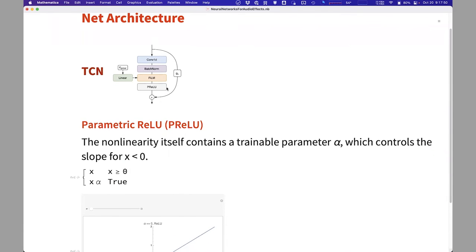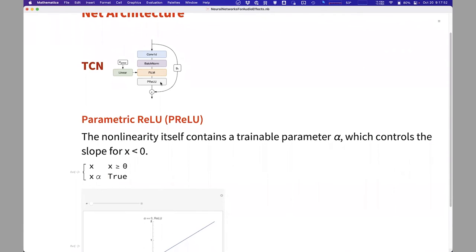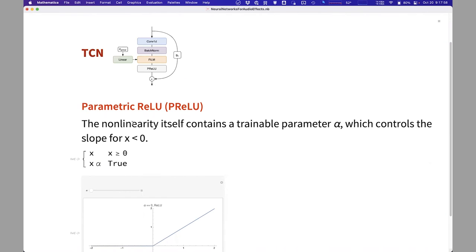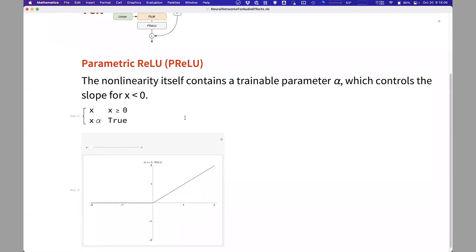Another interesting part is that the activation choice, you can see this is a parametric ReLU, which is a ReLU non-linearity that contains a trainable parameter alpha. So that controls the slope for inputs that are negative.